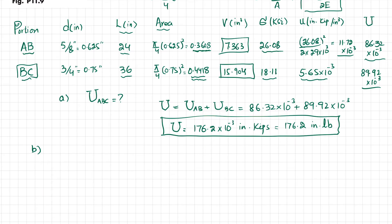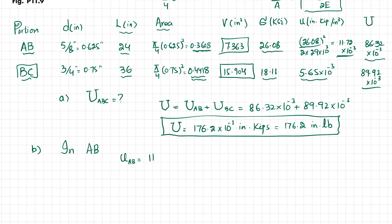For part B, we need the strain energy density of each portion. The strain energy density of portion AB is 11.72 into 10 to the power minus 3 inch·kips per cubic inch, which in pound units is 11.72 into 10 to the power minus 3 inch·pounds per cubic inch.